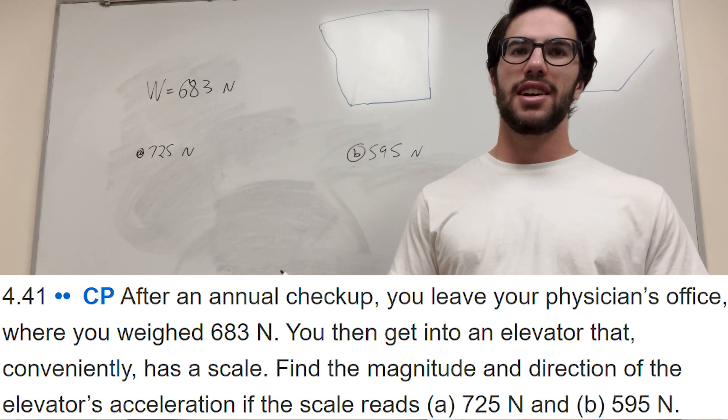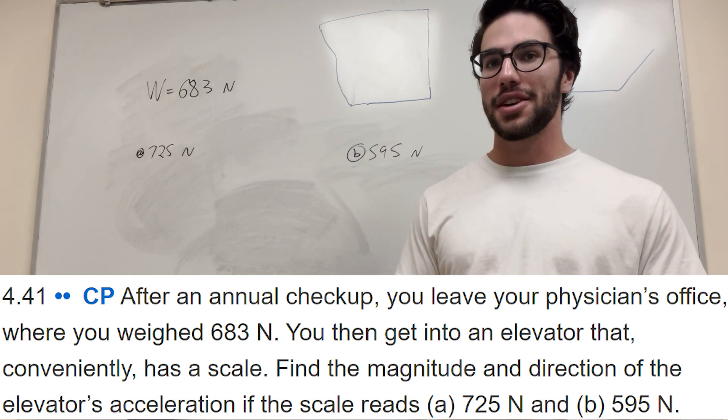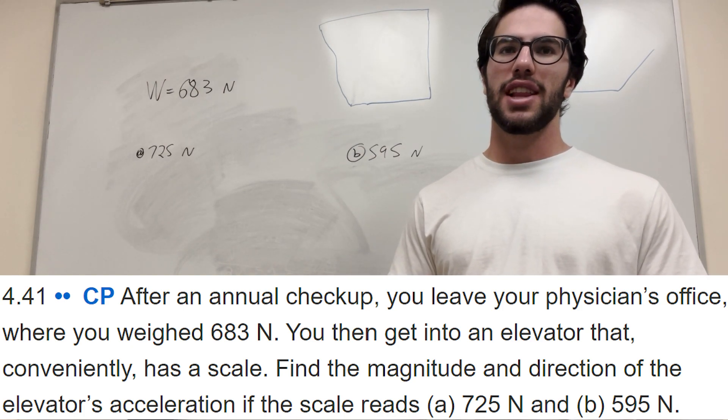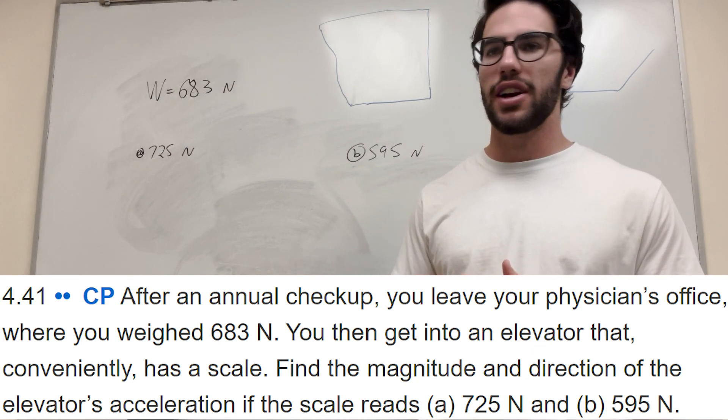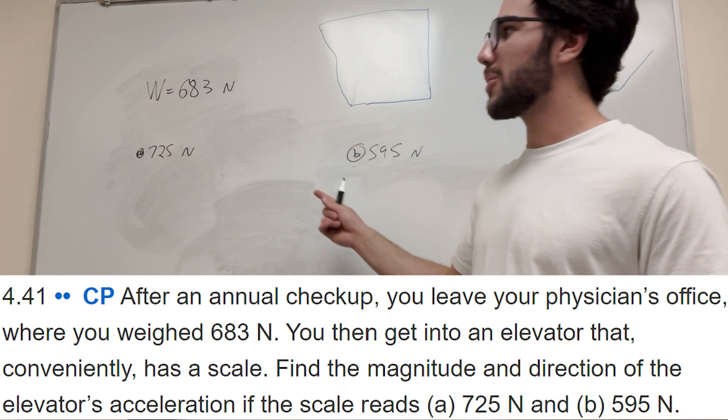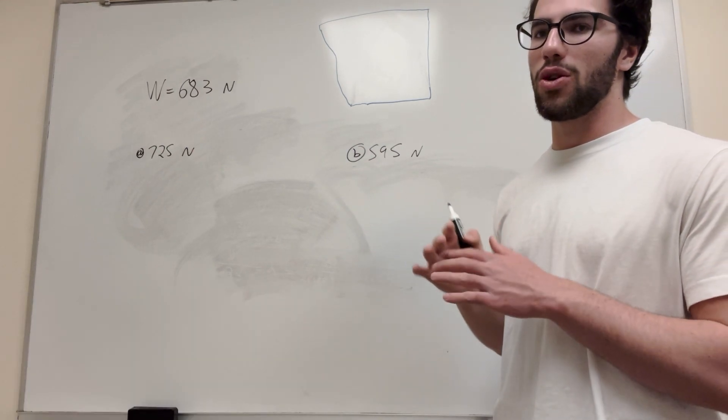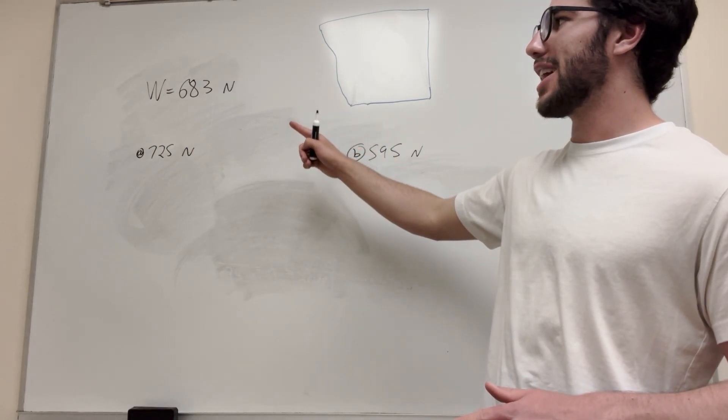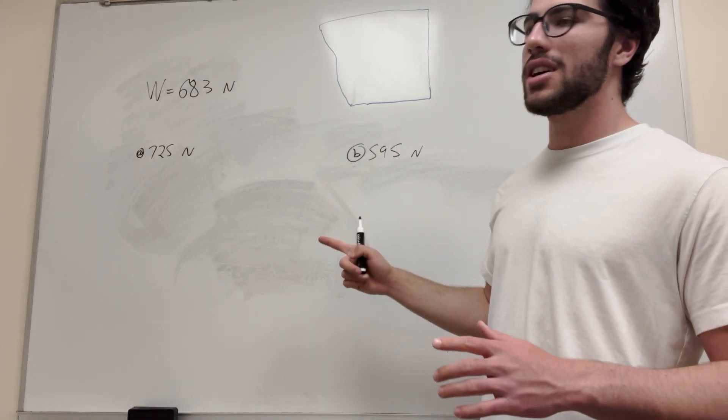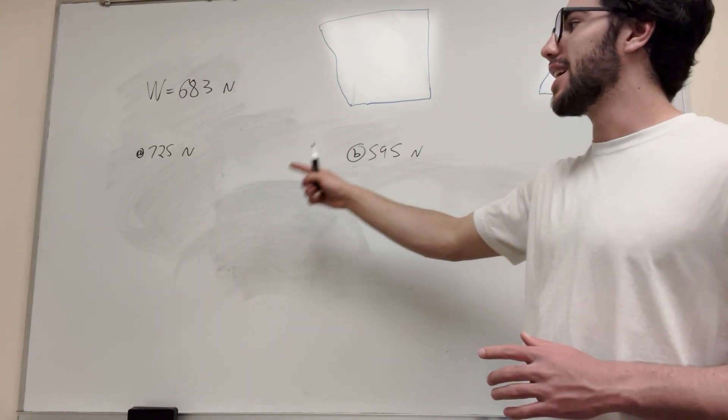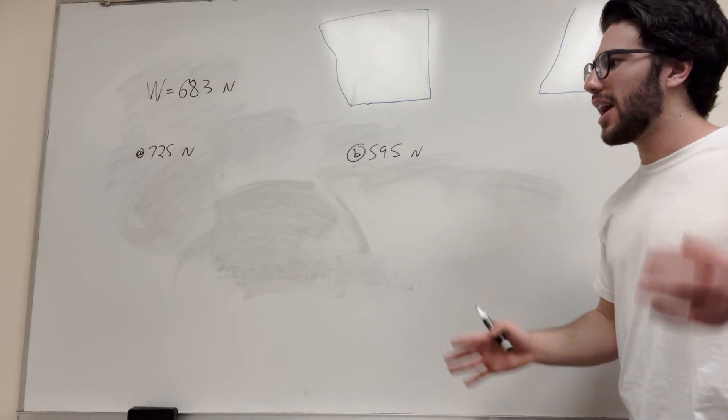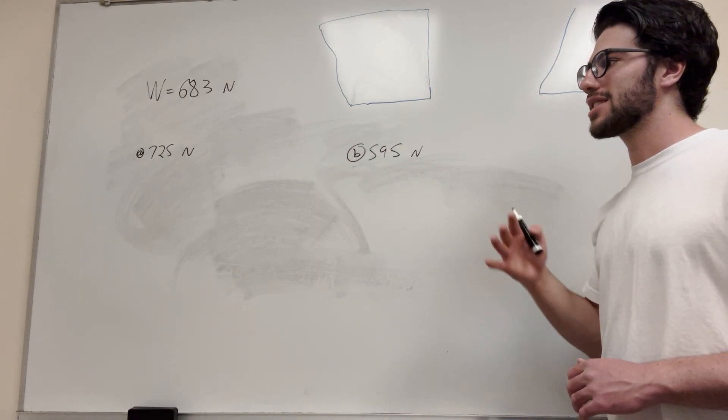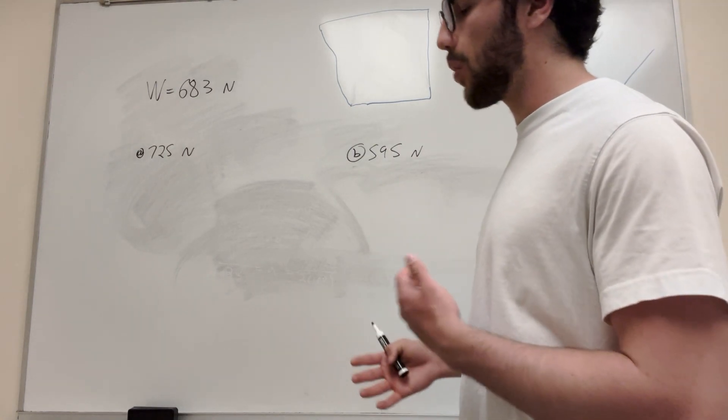So basically we're in an elevator and you notice that when you step on a scale your weight changes, and you want to find the magnitude of the elevator's acceleration due to these two different weights that you have. We're given our initial weight just on a normal flat surface at 683 newtons, and then in the elevator in one situation it's 725 newtons and in another situation it's only 595 newtons. So we're trying to find how fast the elevator is accelerating during these periods to change our weight by that much.